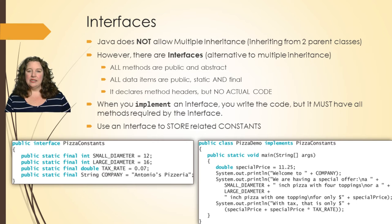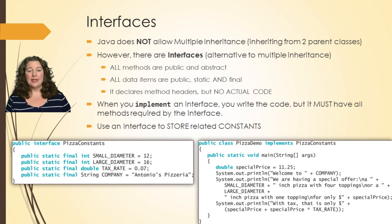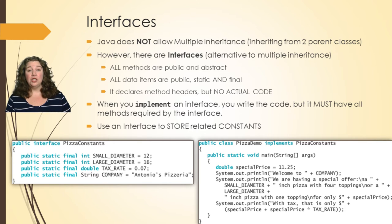When you implement an interface, you're going to be writing all of the code and it must include all of the methods required by that interface. If an interface says you have to implement a speak method or a display method, you have to include that method in your code. The nice thing about an interface is that it gives you a spec you have to follow, ensuring that all programmers who use it write those required methods.